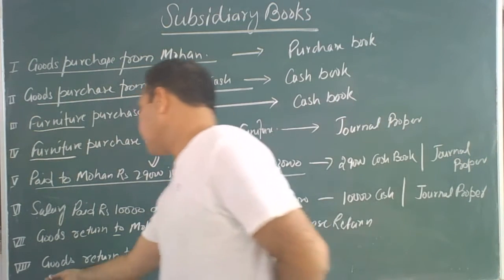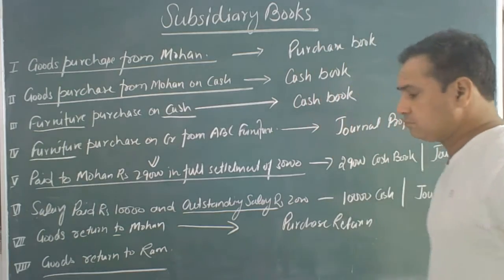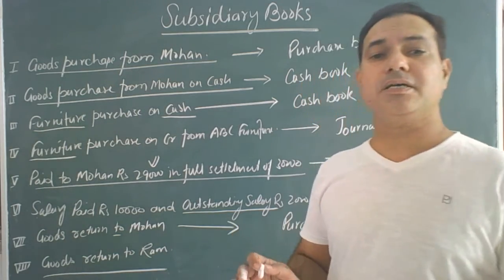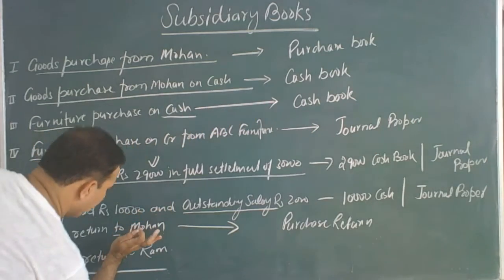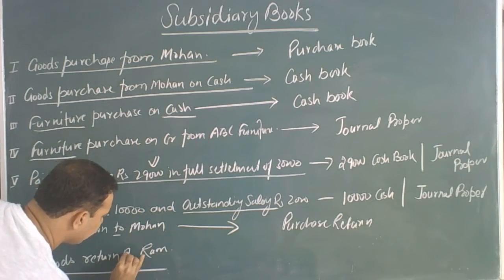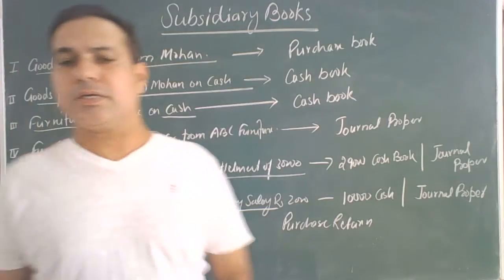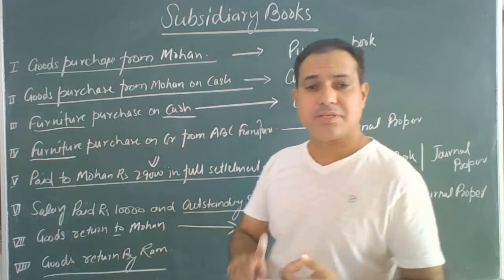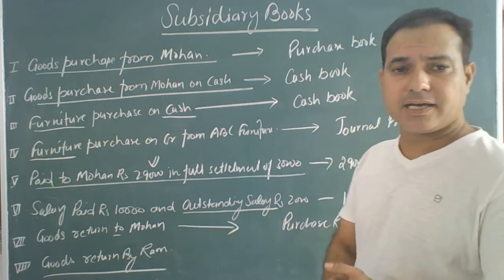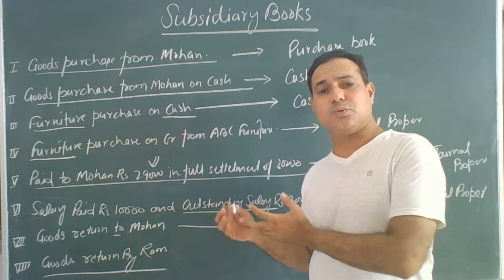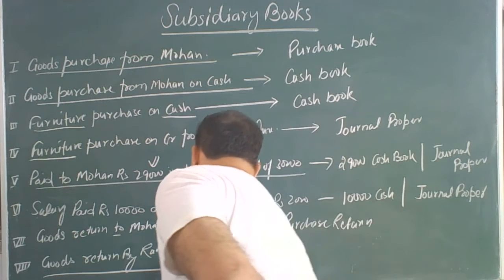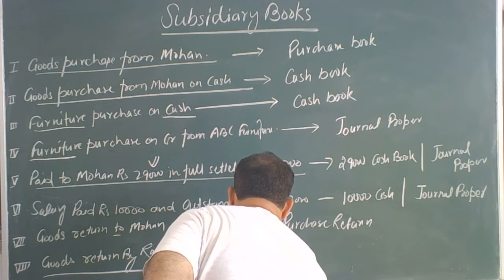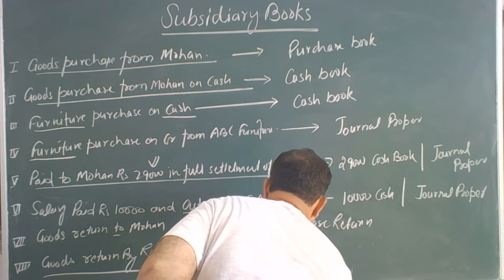Next transaction: goods returned to Ram. Ram is our customer, so whenever any customer returns goods to us, it will go to the sales return book.